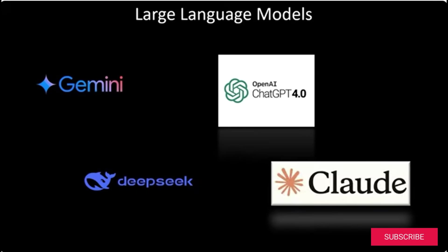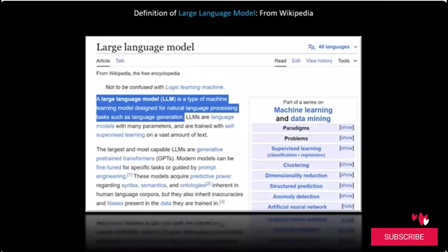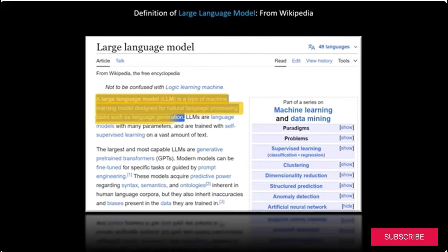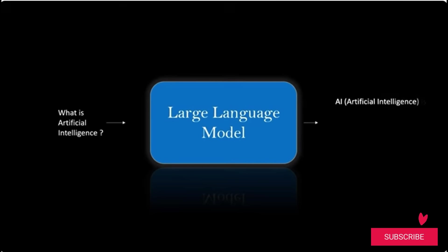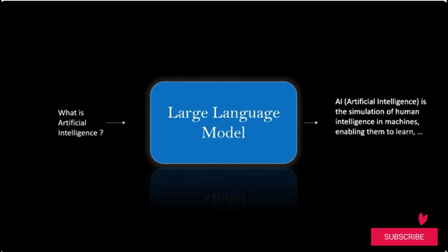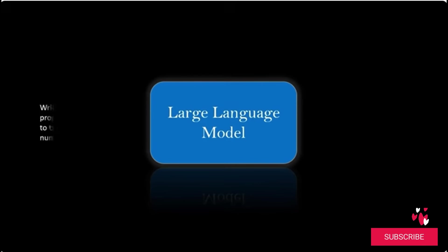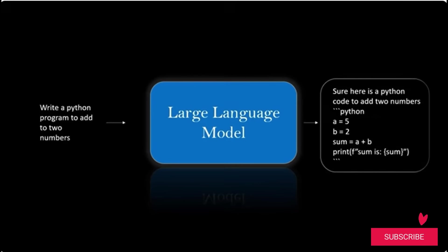First, let us understand the definition of LLM. According to Wikipedia, a large language model, LLM, is a type of machine learning model designed for natural language processing tasks such as language generation. At its core, an LLM is a form of artificial intelligence designed to understand and generate human-like text. Think of it as a super smart computer program that can read, write and even chat with you — it can answer questions, write code, and do many more things.